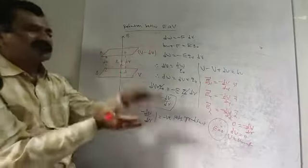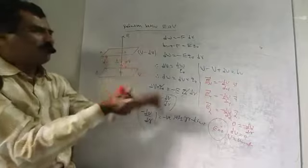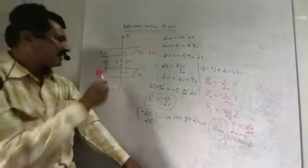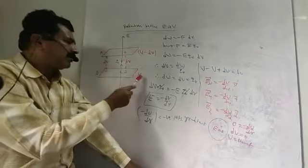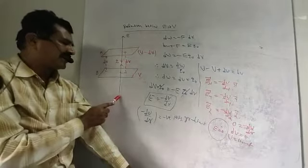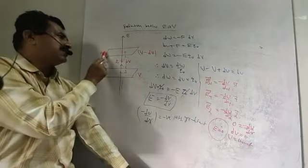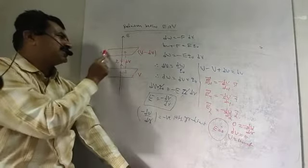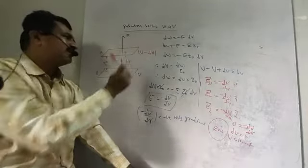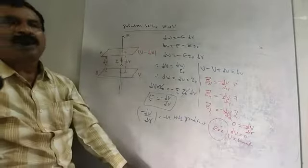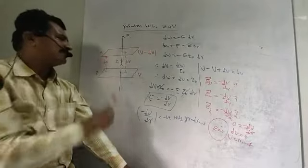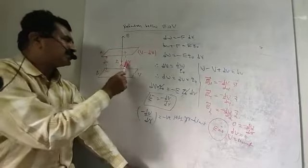These surfaces are a small distance DR apart. The surface B has potential V and the surface A has potential V minus DV. That is why the potential difference between these two potential surfaces is denoted by DV, and the separation between them is DR.